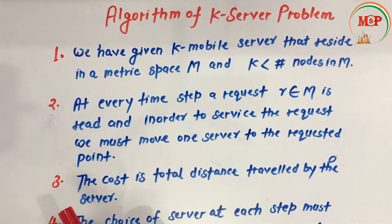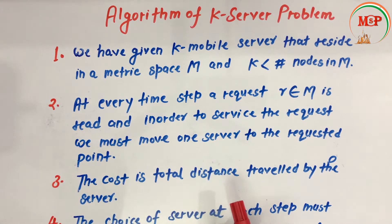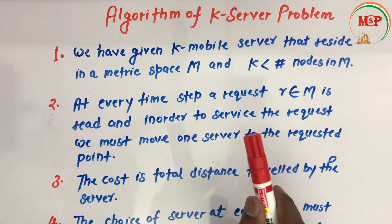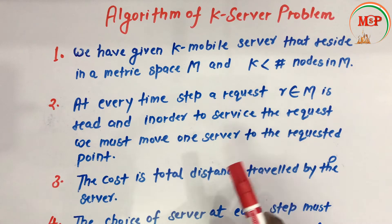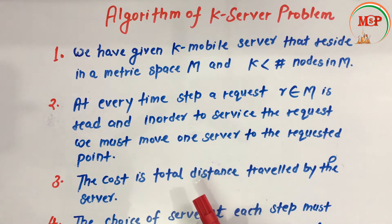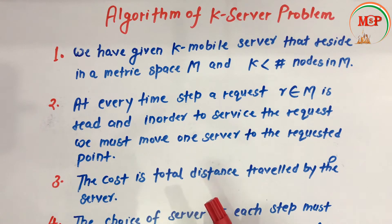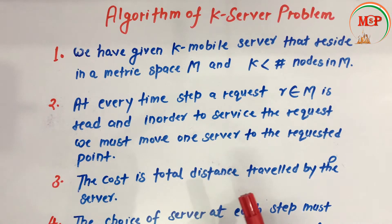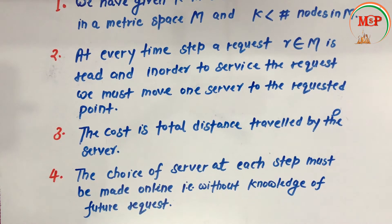The third point is: the cost is the total distance traveled by the server. That is, in the k-server problem, the cost of the algorithm is the total distance traveled by the server — however much distance the server travels, that is its cost.